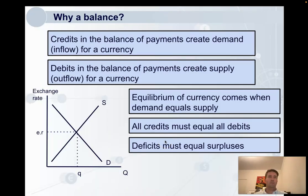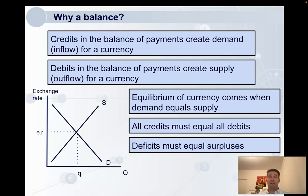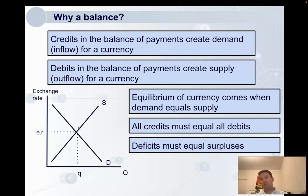Why is there a balance in the balance of payments? Think about the currency: all inflows are really demand for the currency — credits create demand. All outflows are supply of the currency because money flowing overseas means we're buying different currencies, supplying more of our own. For equilibrium, demand must equal supply. So in the balance of payments, credits equal debits, and deficits must equal surpluses. Deficits in the current account must be matched by surpluses in the financial and capital accounts.